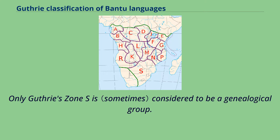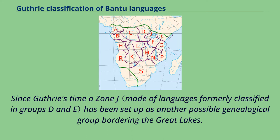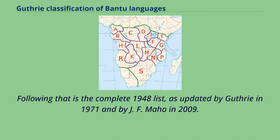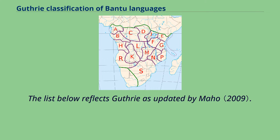Only Guthrie Zone S is considered to be a genealogical group. Since Guthrie's time, a Zone J has been set up as another possible genealogical group bordering the Great Lakes. The list is first summarized, with links to articles on accepted groups of Bantu languages. Following that is the complete 1948 list, as updated by Guthrie in 1971 and by J.F. Maho in 2009. The list below reflects Guthrie as updated by Maho.